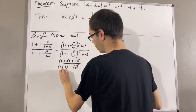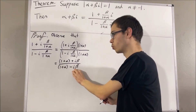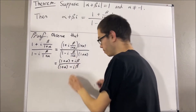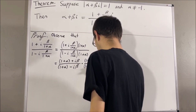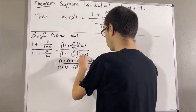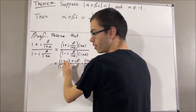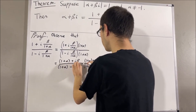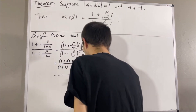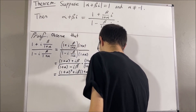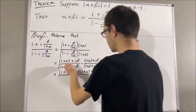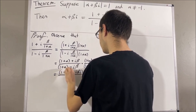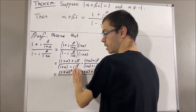But now, to get rid of the complex number in the denominator, let's multiply both the numerator and denominator by 1 plus alpha plus i beta. If we do that, well, in the numerator, what are we going to get? We're going to get 1 plus alpha squared plus i beta times 1 plus alpha plus i beta times 1 plus alpha plus i squared beta squared. And, in the denominator, we're going to get 1 plus alpha plus i beta times 1 plus alpha minus i squared beta squared.